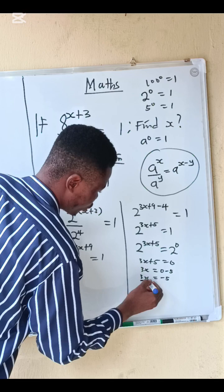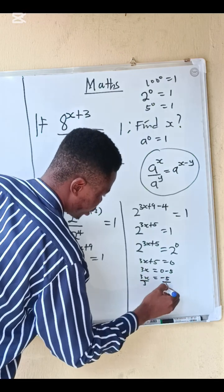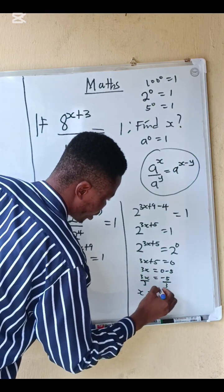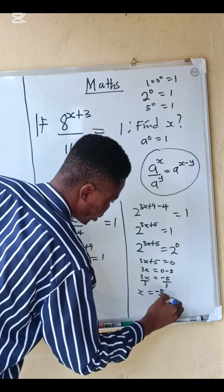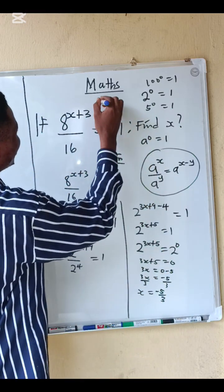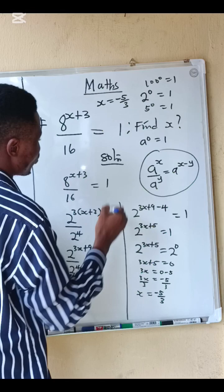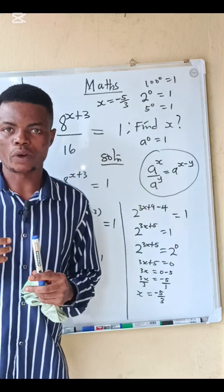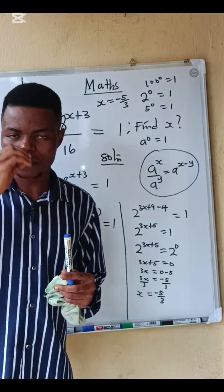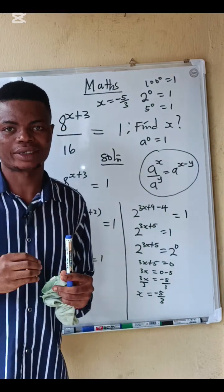Since we are looking for x, divide both by 3. So x equals to minus 5 over 3. The answer is x equals minus 5 over 3. Please don't forget to share, subscribe, and follow me for more lessons. Bye bye.